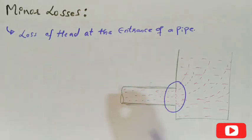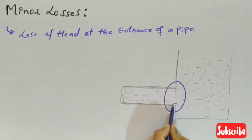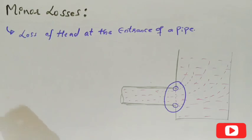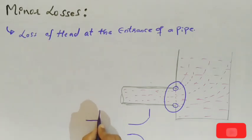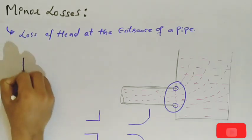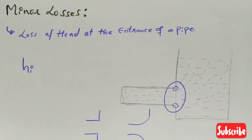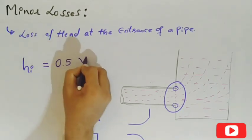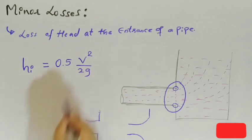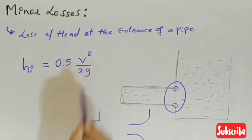This loss depends upon the type of entrance. For sharp edges, the losses are slightly more than for curved edges. If the pipes are given some curve at the entrance, the losses will be less. If the pipes have sharp edges as shown in this figure, the losses will be more. This loss is denoted by h_i and is given by the equation: h_i = 0.5 v² / 2g, where v is the velocity of the fluid and g is the gravitational constant.